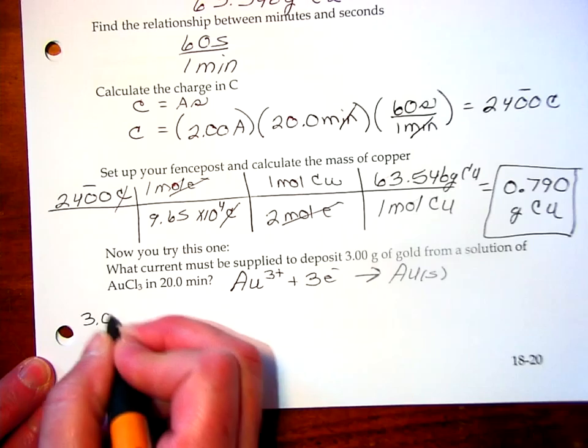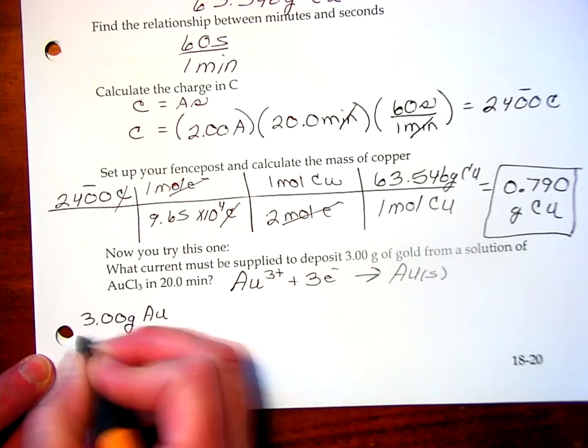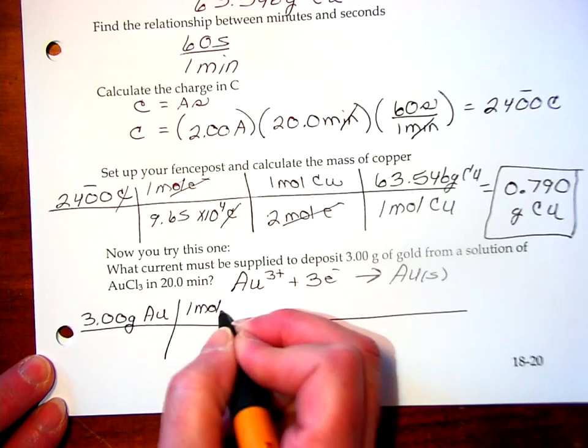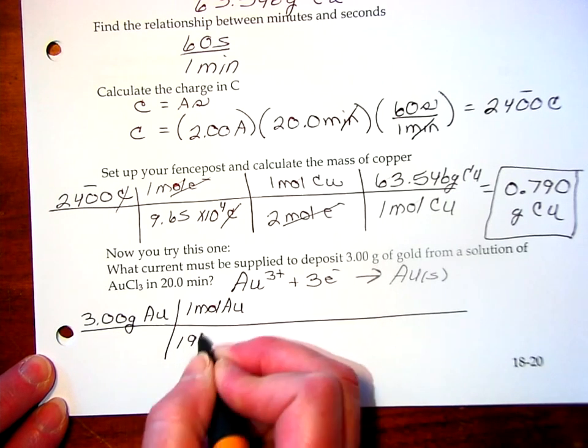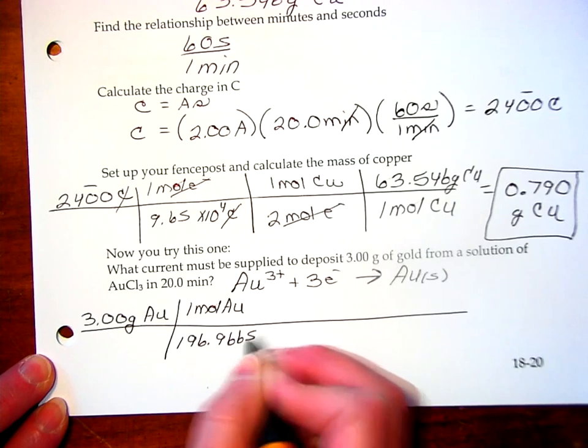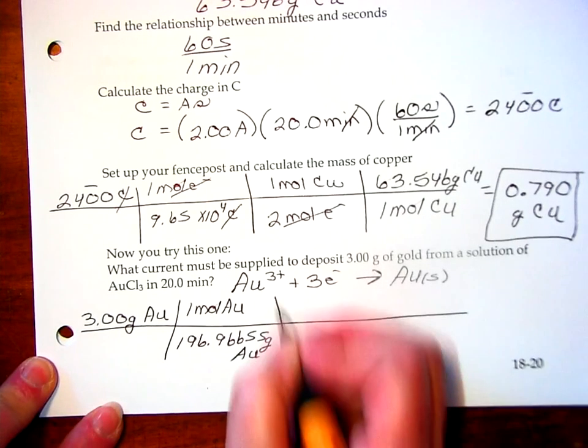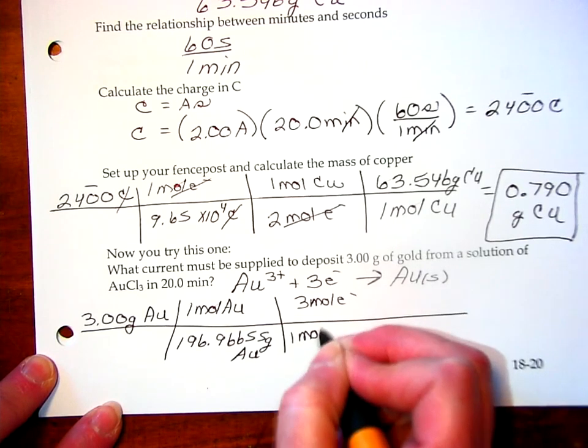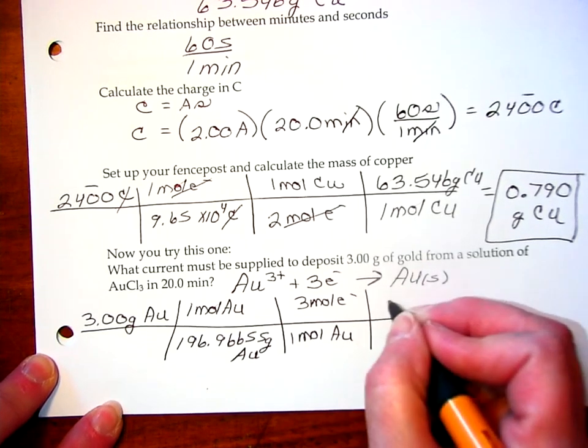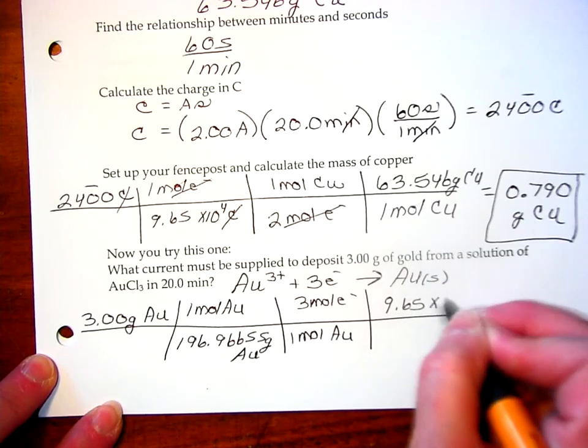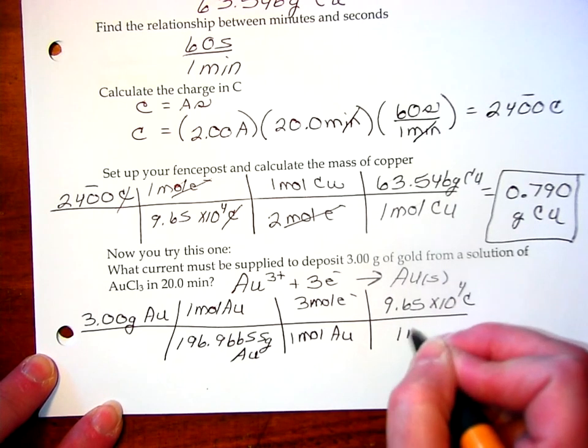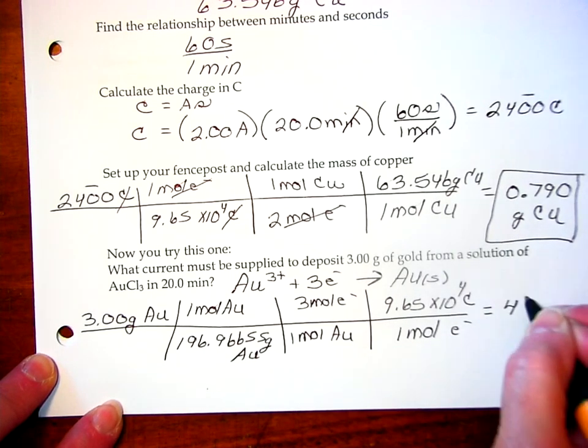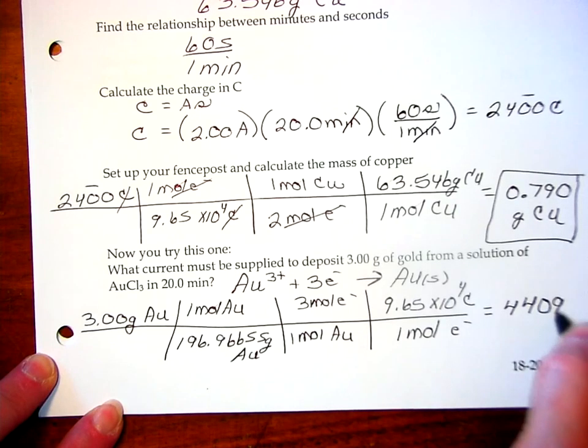I start off with my 3 grams of gold. I know that I want to make 3 grams of gold. And, I know that 1 mole of gold has a mass of 196.96655 grams of gold. It takes 3 moles of electrons to make 1 mole of gold. And, we know that it takes 9.65 times 10 to the 4th coulombs of charge per 1 mole of electrons.